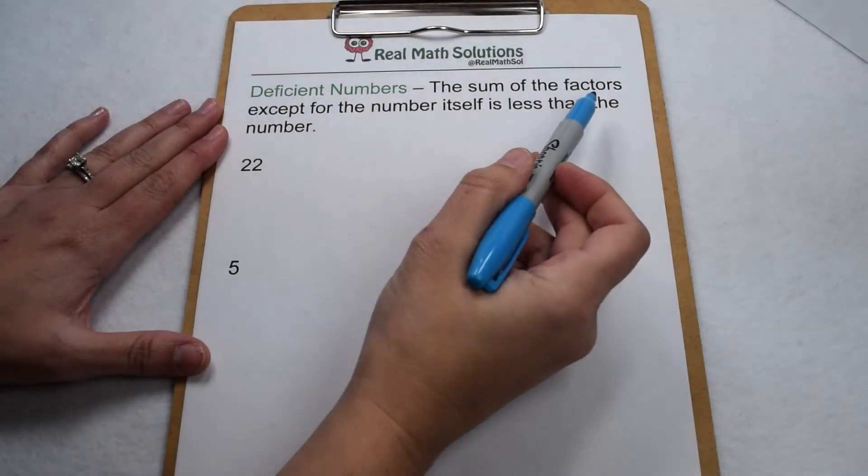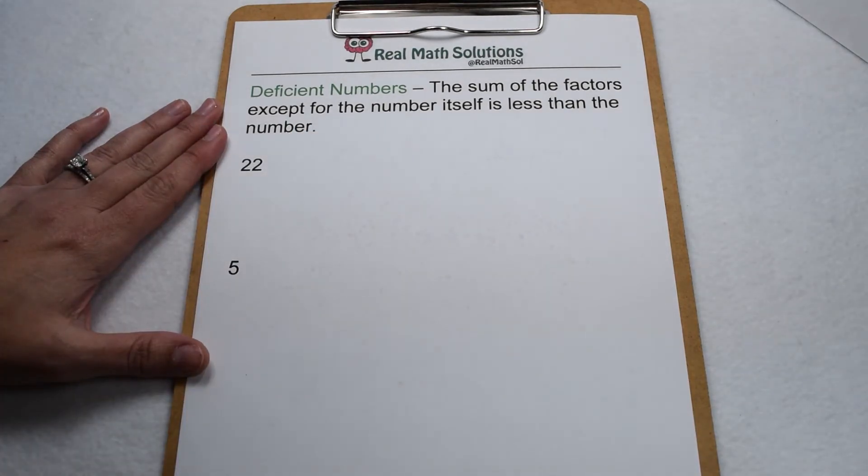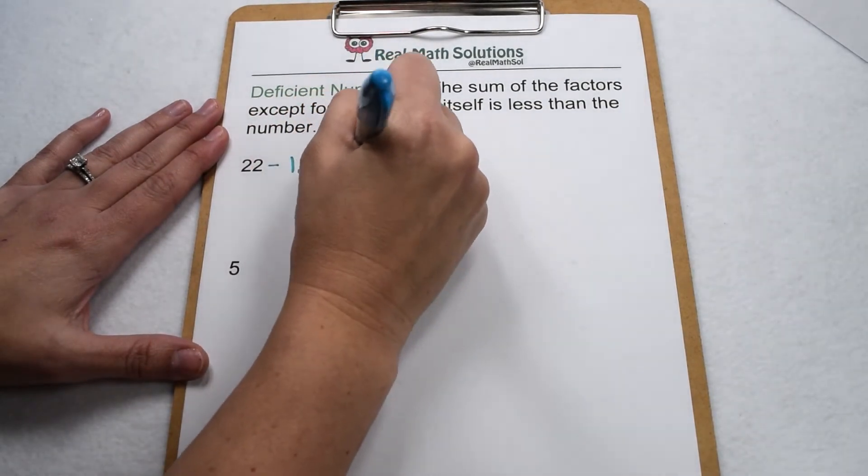Deficient values occur when the sum of the factors except for the number itself is less than the number. 22 would be an example of a deficient number. Factors of 22 include 1, 2, 11, and 22.